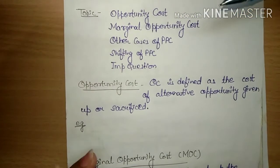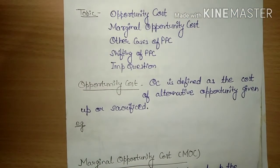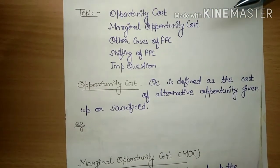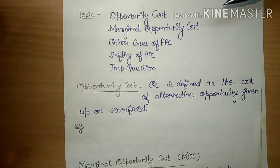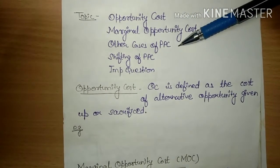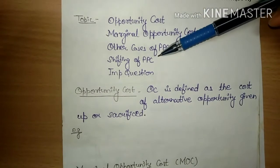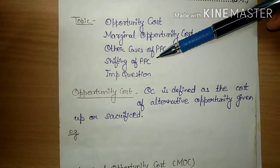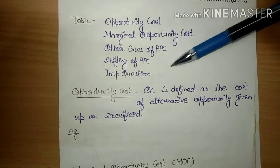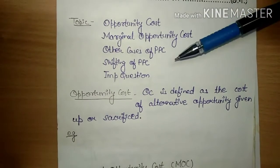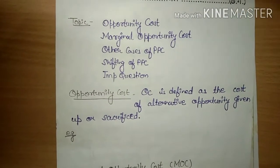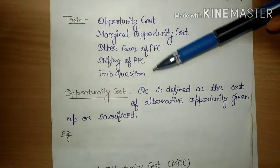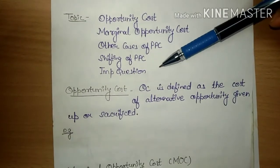Aur yahan bas other cases hain jaise PPC ke — aap ne abhi tak sirf concave case padha tha. So hum 2-3 cases aur hain, woh discuss karenge. Next is shifting of PPC — PPC ki shifting — PPC curve jo hai woh rightward, leftward, toh yeh sab jo bhi iski shifting hai, woh padhenge. Phir kuch important questions hain, woh bhi.